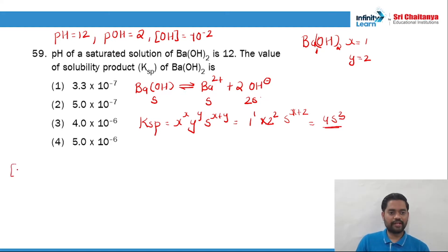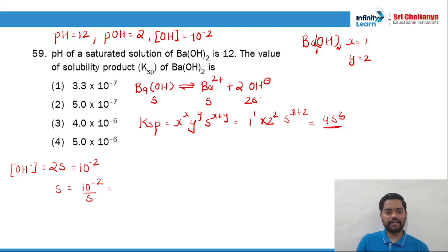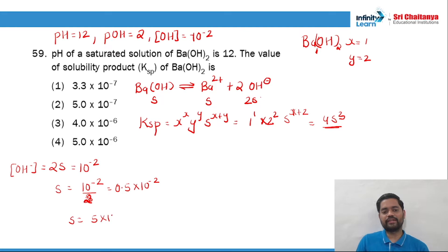Concentration of OH⁻ will be equal to 2S, which equals 10⁻². So S = 10⁻²/2 = 0.5 × 10⁻², hence S = 5 × 10⁻³. Now we have S, and Ksp = 4S³.